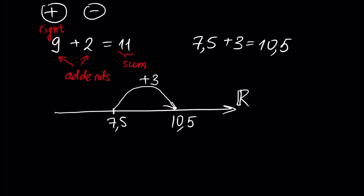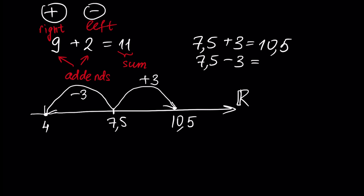When we perform subtraction and write 7.5 minus 3, this can be described as moving to the left side of the real line by 3. The result is obviously 4.5. So this is a description of subtraction — it is very hard to define formally.